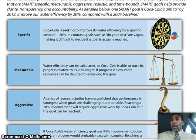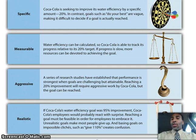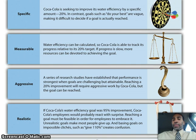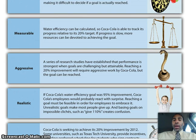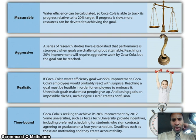Measurable: water efficiency can be calculated, so Coca-Cola is able to track its progress relative to its 20% target. If progress is slow, more resources can be devoted to achieving this goal. Aggressive: research studies have established that performance is strongest when goals are challenging but attainable — challenging but also attainable. It's not like telling someone to jump from Earth to the moon; it's worked by Coca-Cola and the goal can actually be reached.